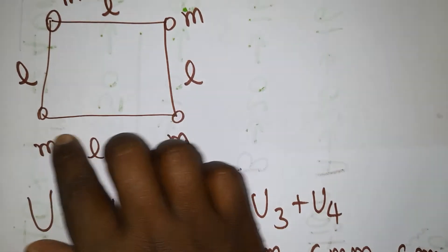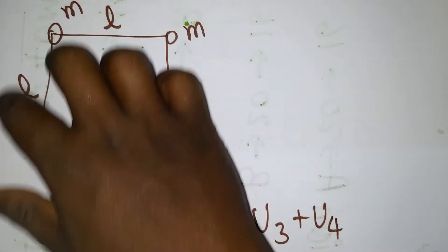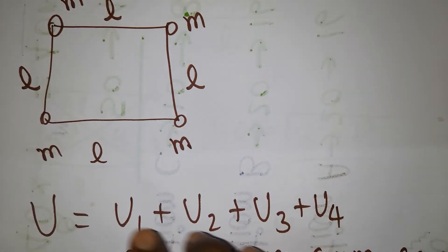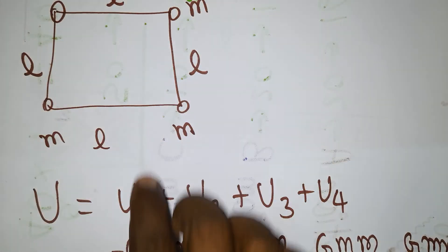Now we will see the question. We have a square shape where all the sides are length l. They want the energy required to arrange this system.